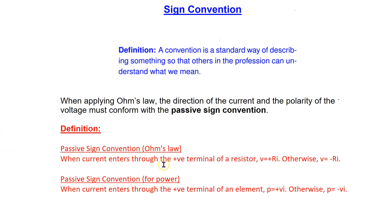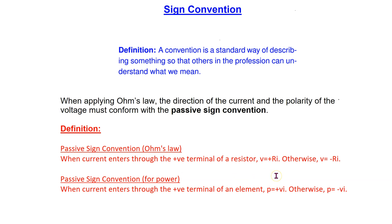In order to account for the voltage polarity and the current direction, we need to specify the sign convention. A convention is a standard way of describing something so that others in the profession can understand what we mean. The most widely used sign convention in electrical and electronic engineering is the passive sign convention. Passive sign convention applied to Ohm's law states: when the conventional current enters through the positive terminal of a resistor, we use Ohm's law with a plus sign; otherwise we use Ohm's law with a negative sign.